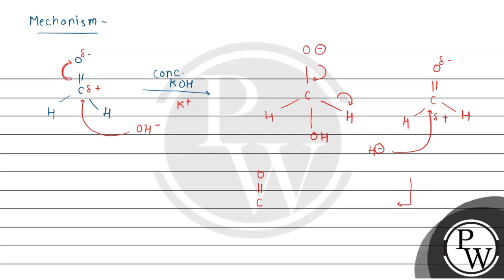This gives us carbon double bond oxygen with hydrogen and OH. The hydride adds to form CH3, along with O minus and K plus.